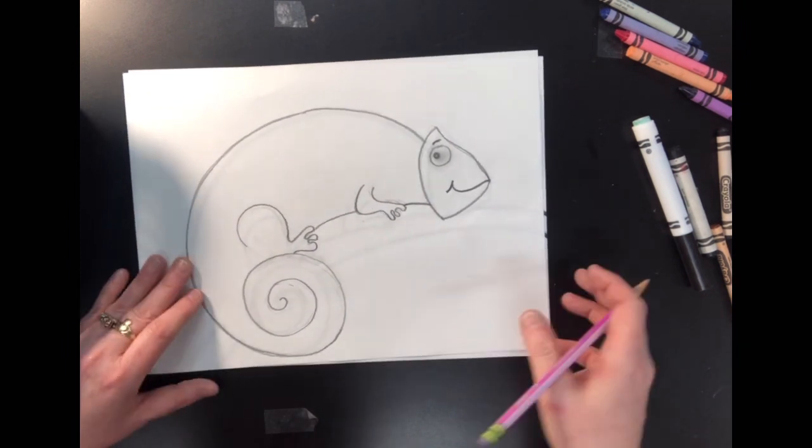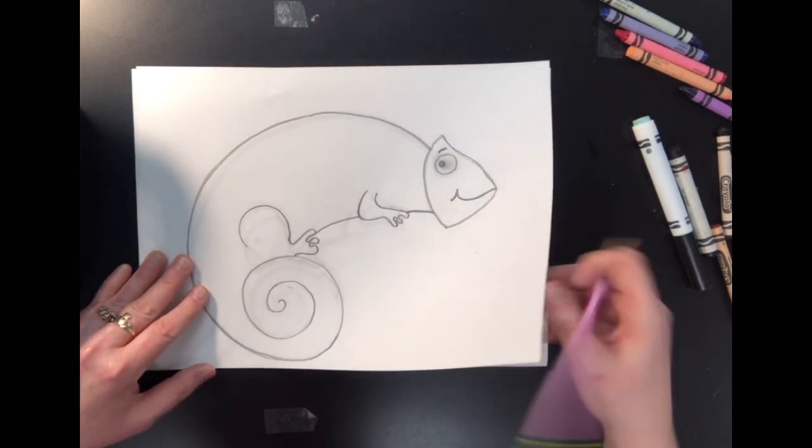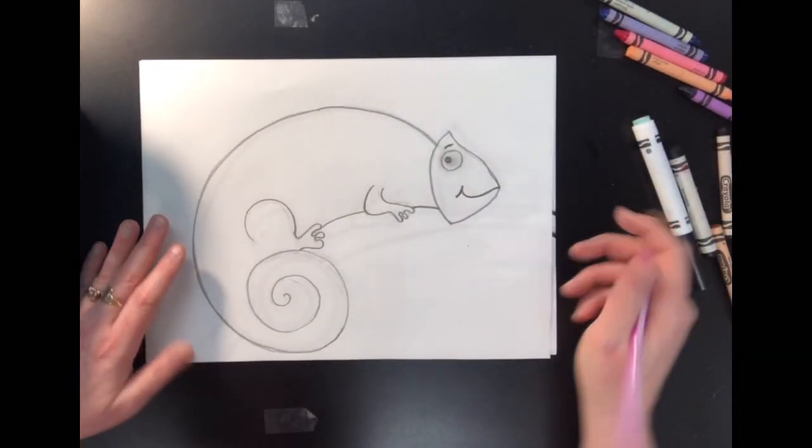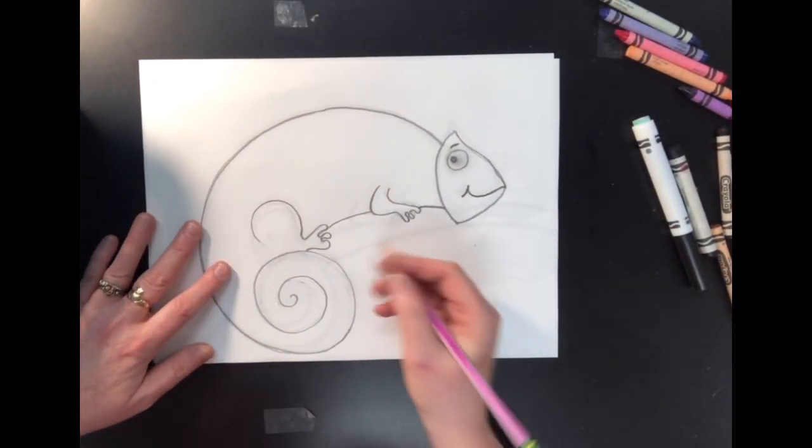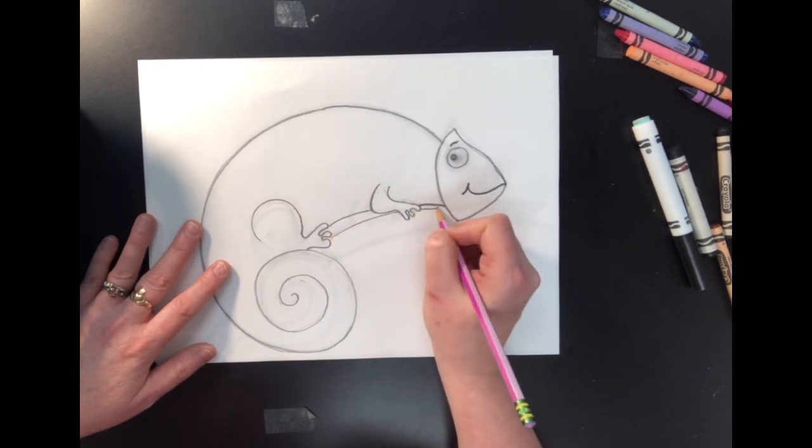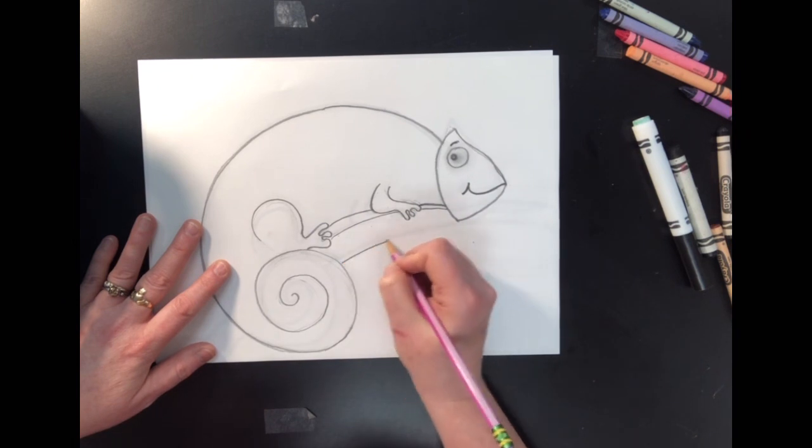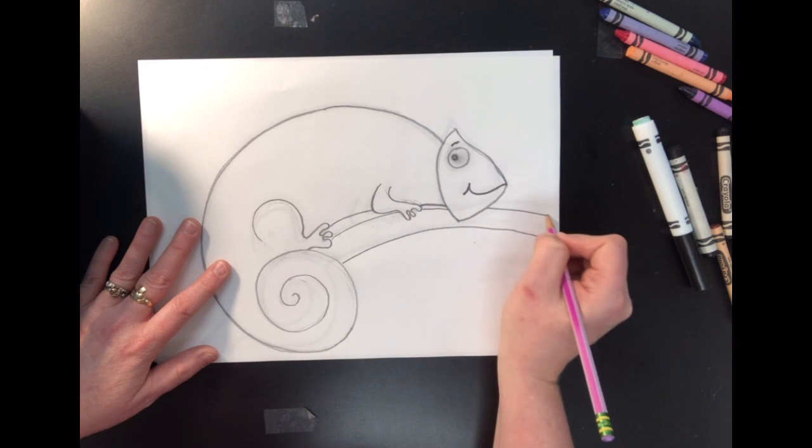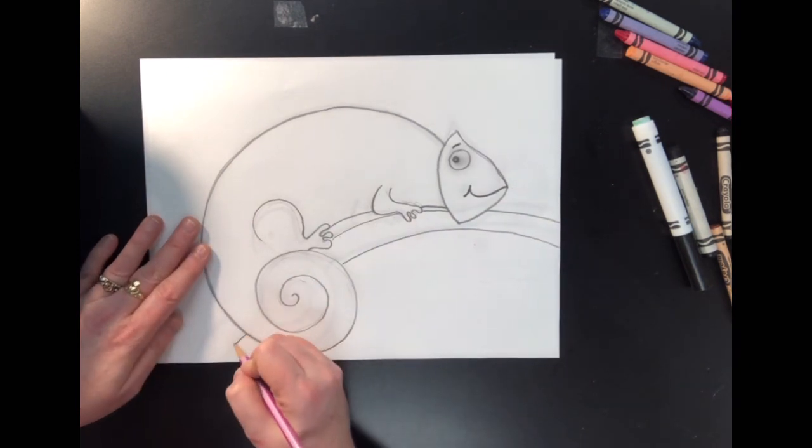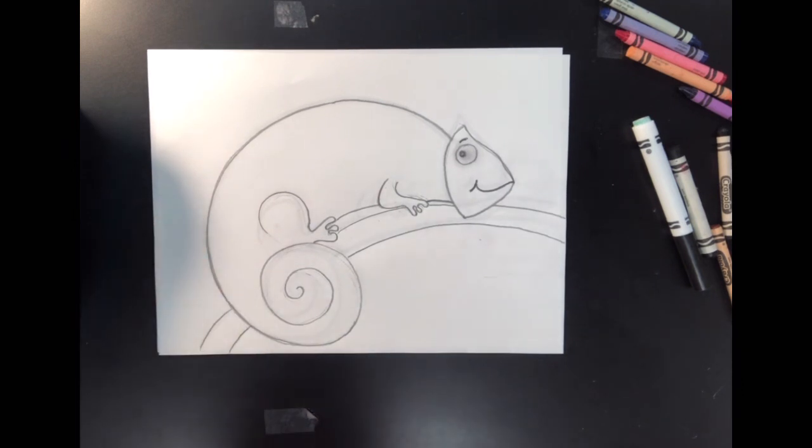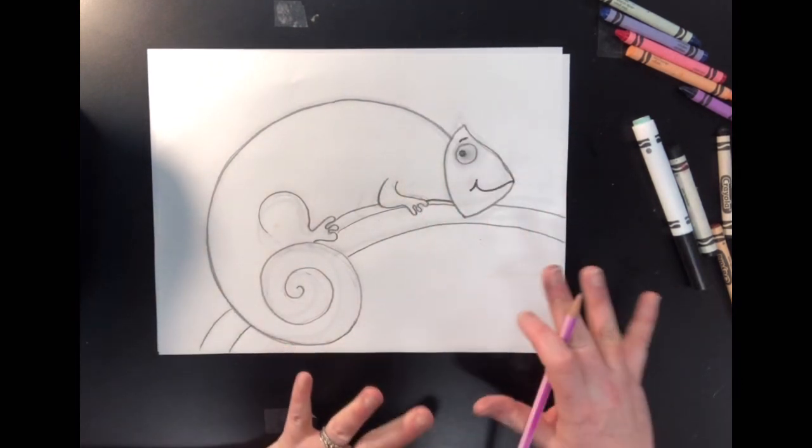And chameleons usually sit on some type of a tree branch. So we're going to go ahead and make a tree branch for him to sit on. So right underneath this body, I'm going to draw a couple of lines to indicate a nice wide tree branch here, just kind of bending. And then curve a couple of lines down here at the bottom to finish off the tree branch. And we can add lots of leaves and details later.